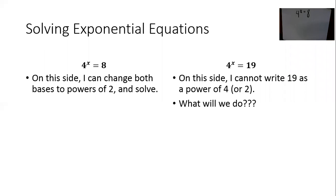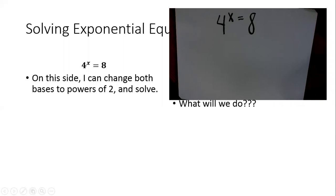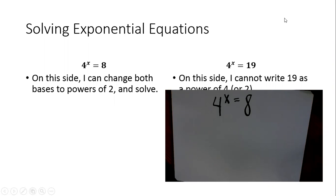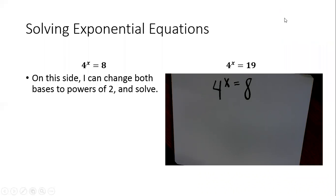So on the left side here, you can see what we did before. We have 4 to the X equals 8. If we have something like that, well then I can just change the bases on both sides and then solve it. So if I have 4 to the X equals 8, just as a review.